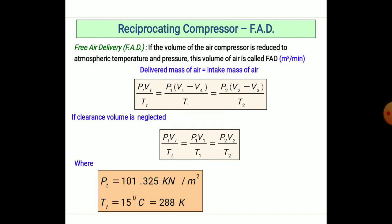We can calculate the Free Air Delivered (FAD), which is reduced to atmospheric temperature and pressure. The formula is P1V1/T1 = PaVa/Ta, where P1 is always 101.325 kN/m² and temperature is always 15°C, which is 288 K.